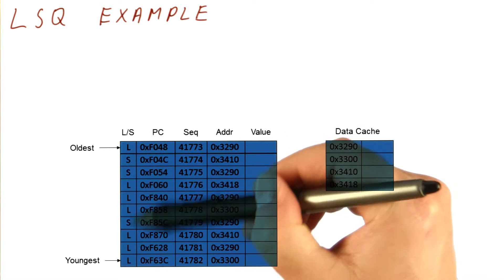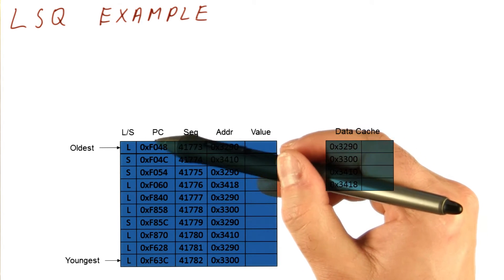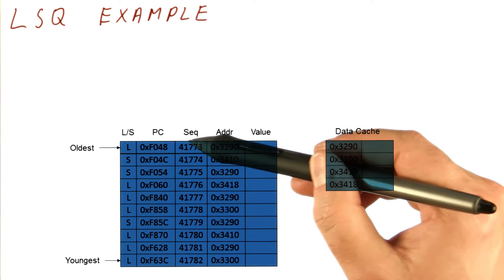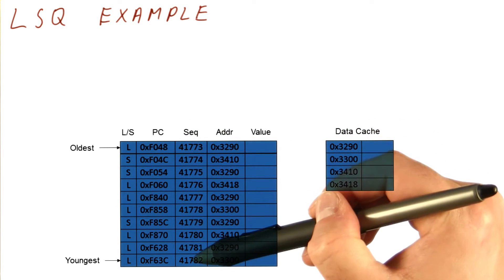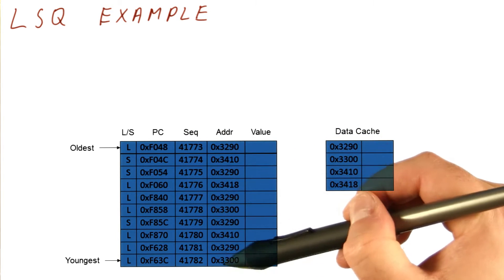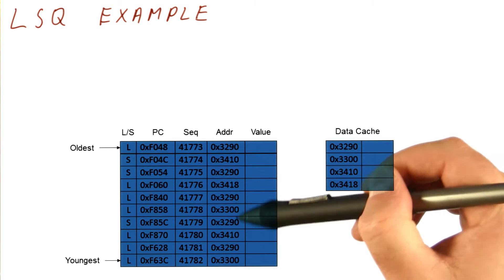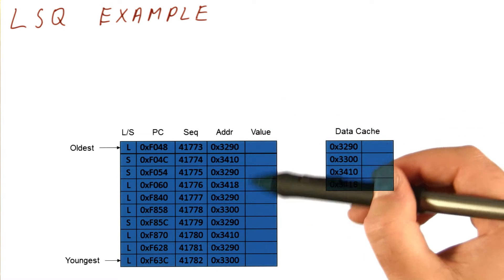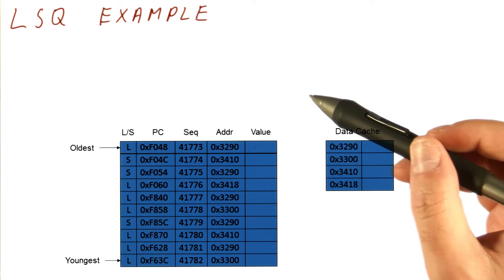This says whether it's a load or a store. This tells us what address the load or store was fetched from. This is the sequence number, basically just going up. And this is the address to which the load or store resolves to. And this is the value that we will get for that load or store.